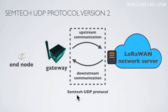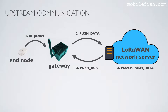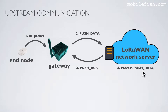The Semtech UDP protocol sets the rules for upstream communication and downstream communication. First, let's look at the upstream communication. When a gateway receives an RF packet from an end node, the gateway creates a push data packet which is sent to a LoRaWAN network server. After the server receives the push data packet, the server sends a push acknowledge back to the gateway, and then processes the push data packet.